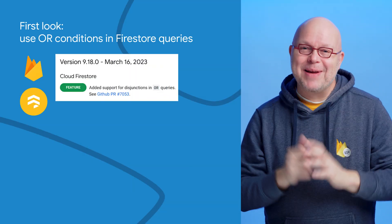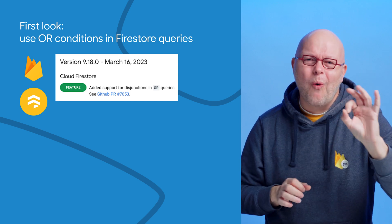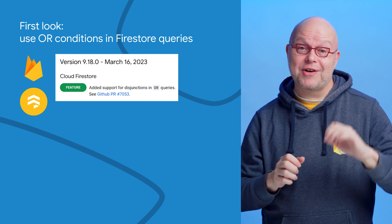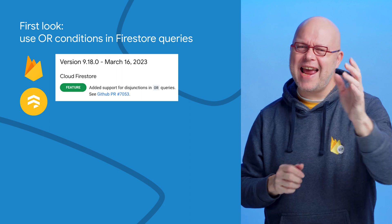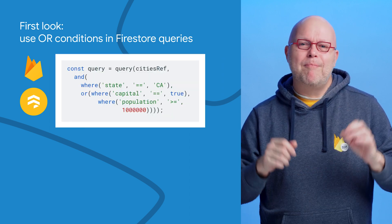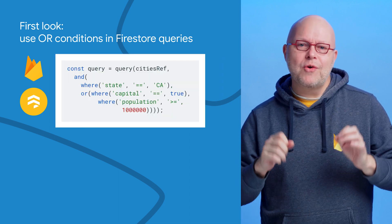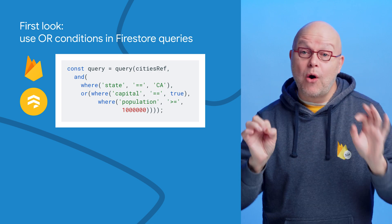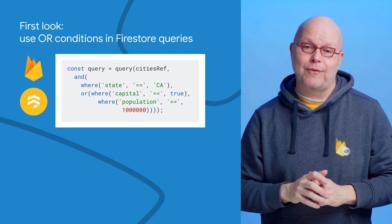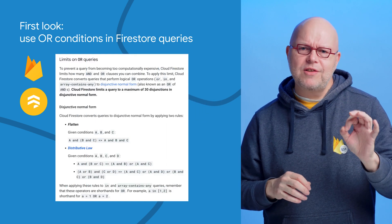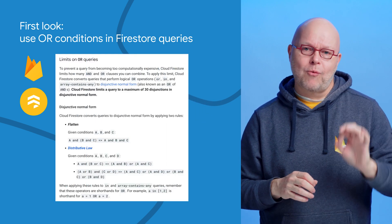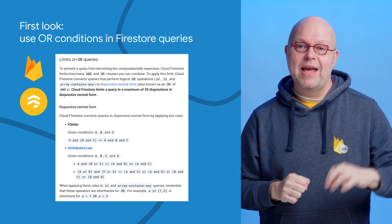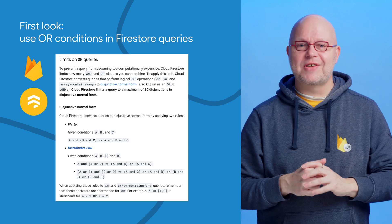And finally, and this is a big one, Firestore now supports OR conditions in queries. This is a much requested feature, and it just landed in most of our SDKs and in the documentation. By adding AND and OR clauses, you can build complex queries like this one. This release is so fresh that I haven't had a chance to work with it myself yet. It's important to know that Firestore prevents a query from becoming too slow by converting it to a so-called disjunctive normal form and then limiting that to 30 clauses.